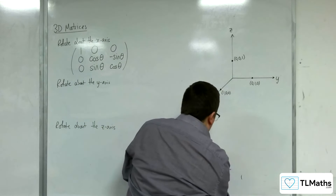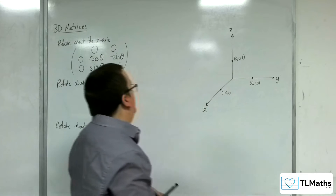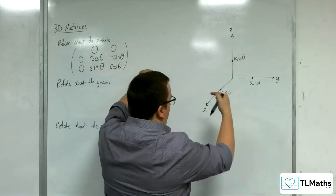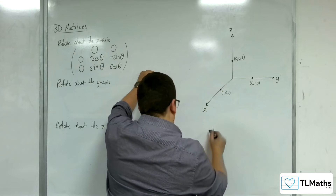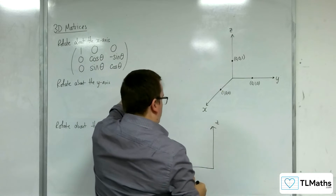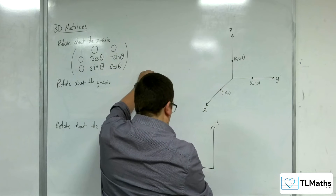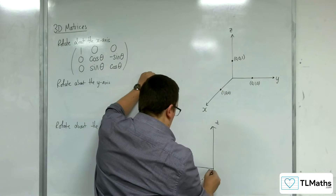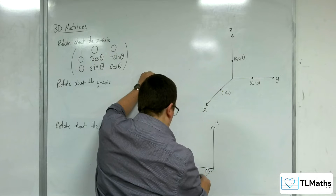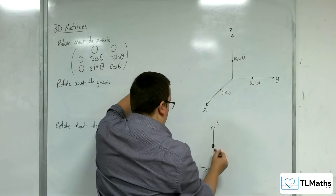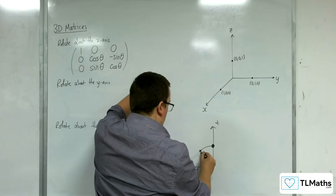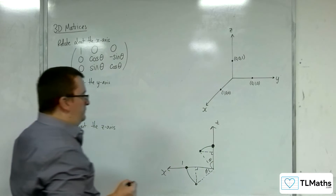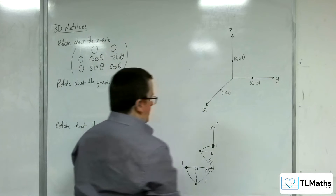Let's now have a look down the y-axis. The y-axis, if I'm looking down that way, we'll draw out that as z, that as x. I've got this point here, (1, 0, 0), which is being rotated round, and we'll make an angle theta. And this point here, (0, 0, 1), which is rotating round by an angle theta. There's my right-angle triangle. So, once again, the hypotenuse of each of those triangles is 1.